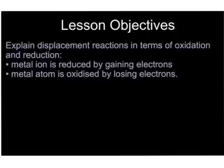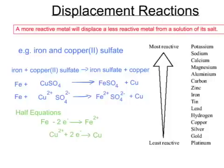Now let's look at these reactions in terms of oxidation and reduction. When iron reacts with copper sulfate, it makes iron sulfate and copper. The iron atoms react with the copper sulfate, which is made of copper 2+ ions and sulfate 2− ions in aqueous solution, to make an aqueous solution of iron sulfate — made up of iron 2+ ions and sulfate 2− ions — and copper atoms.